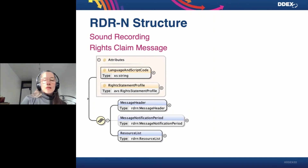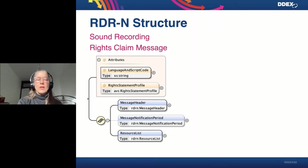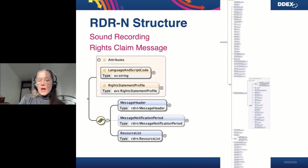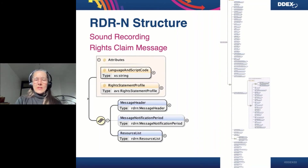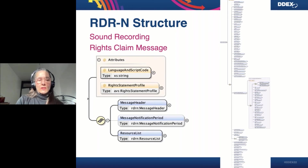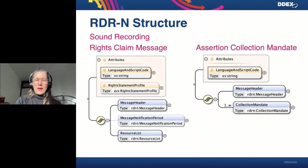The structure of RADAR-N, as Mark and Niels mentioned, is structured based on most of the DDEX standards. You have the header and, most importantly for this particular message, all the information in the resource list. The RADAR-N standard is resource-based rather than release-based — sound recording versus album-based, as an example. Every time there is an update for a particular sound recording or resource, a new message is sent. The data is quite vast, but none of it is mandatory.